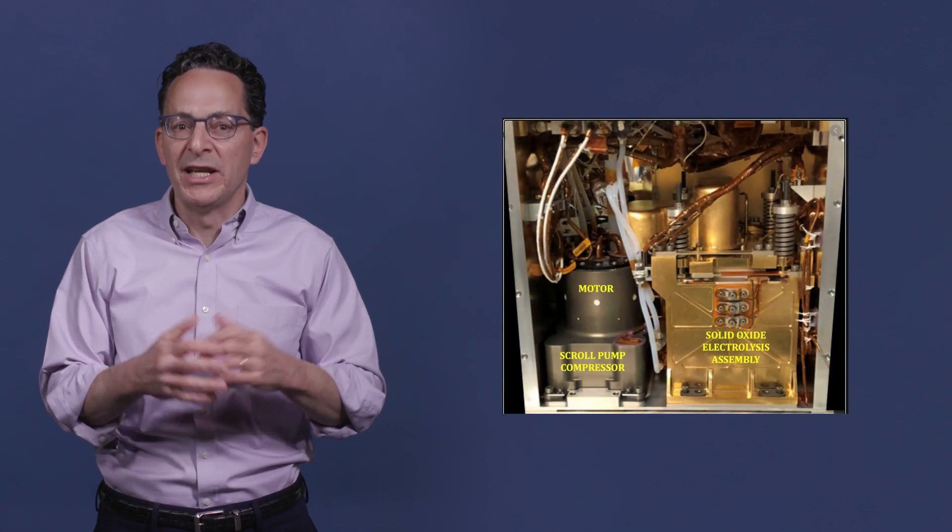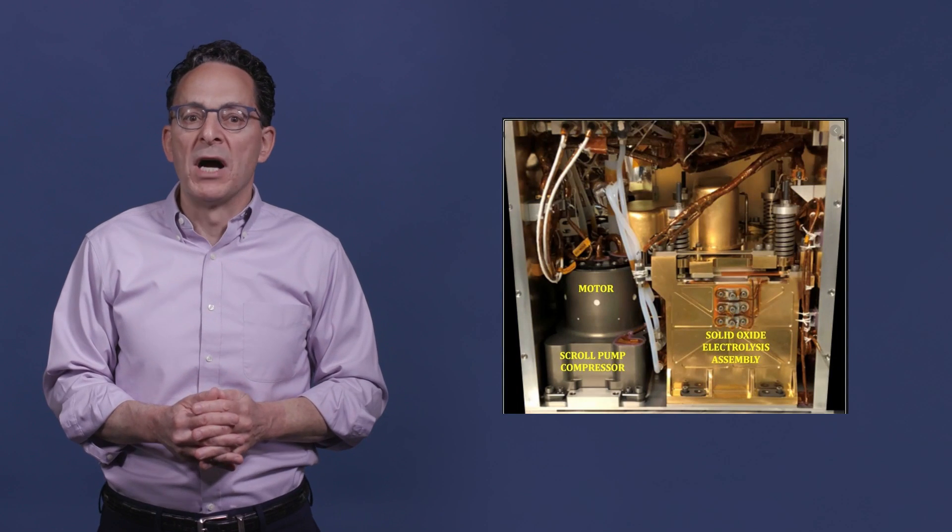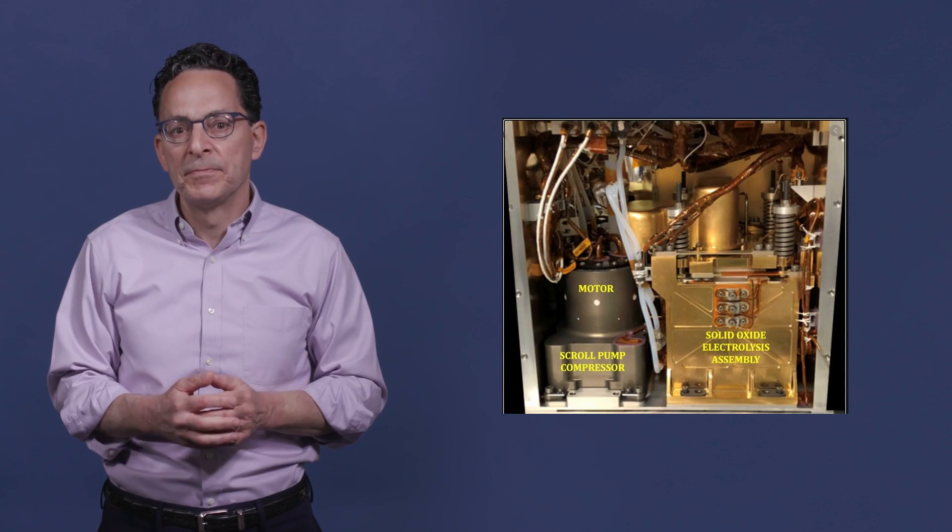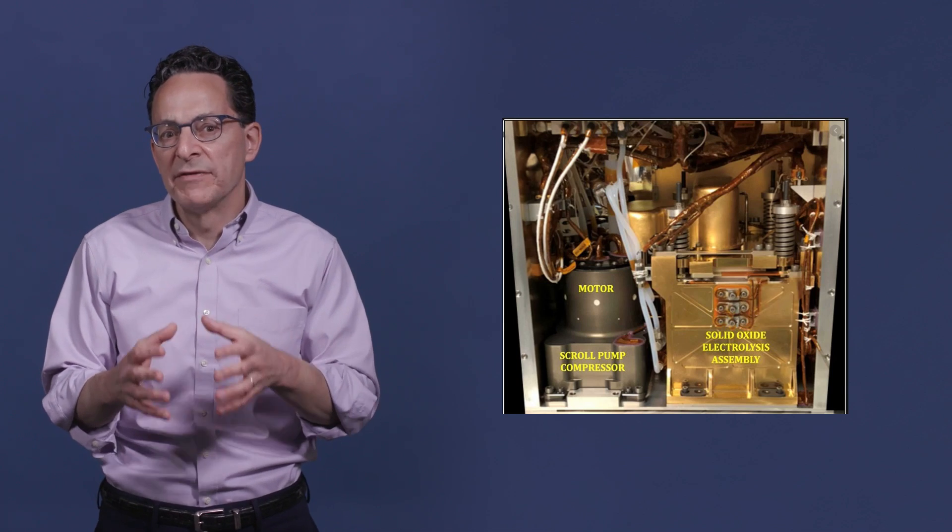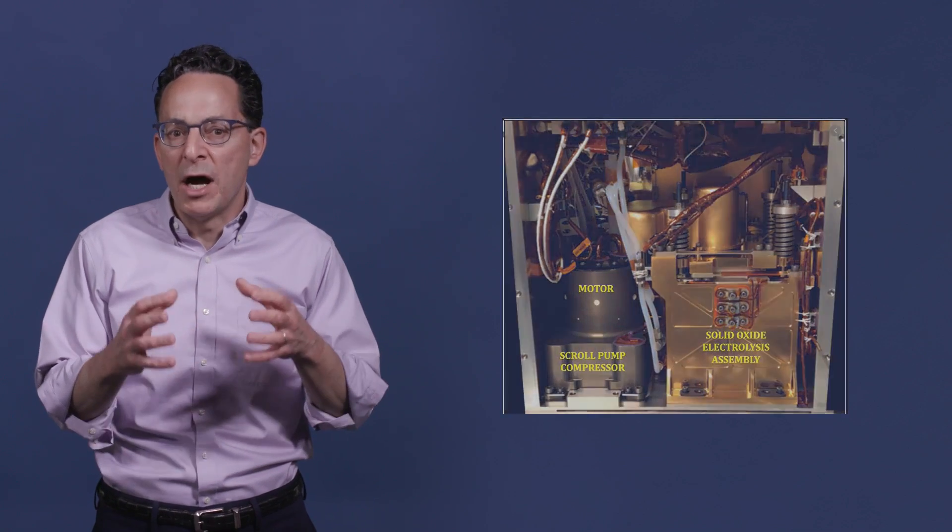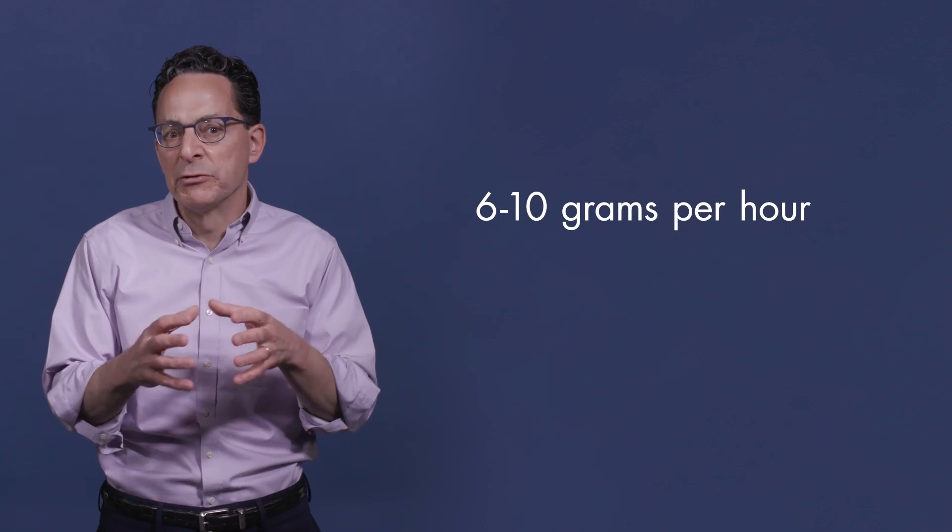Here's what MOXIE looks like inside. MOXIE uses a compressor, a heater, and the chemical process of electrolysis to create oxygen at a rate of 6 to 10 grams per hour.